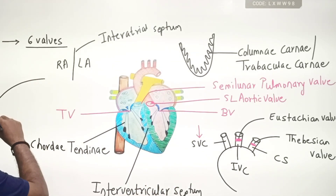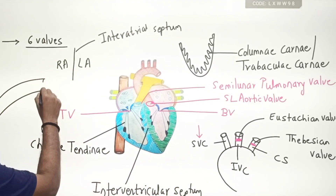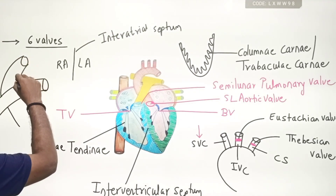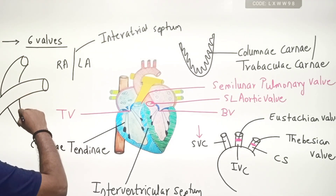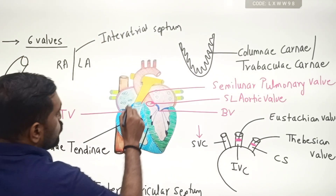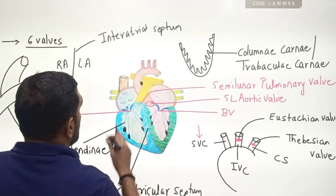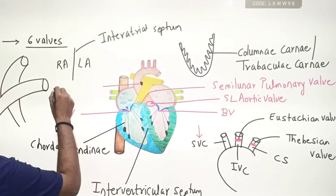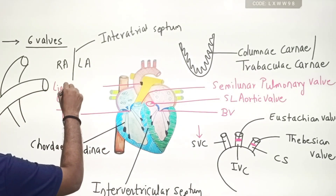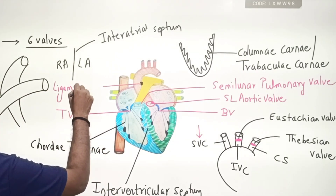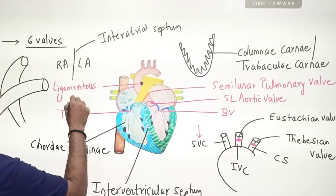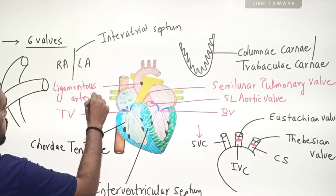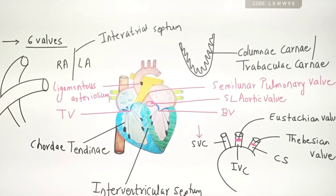The most important point is that the pulmonary artery and the aorta are attached to each other at one point. The point where they are attached is given a name — it is called the ligamentum arteriosum.